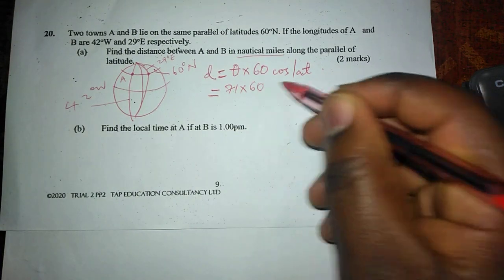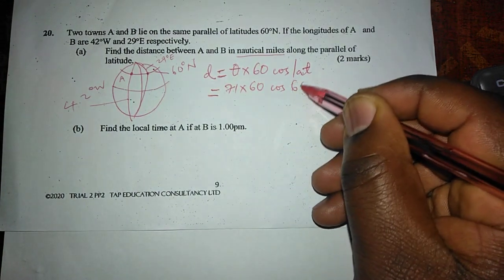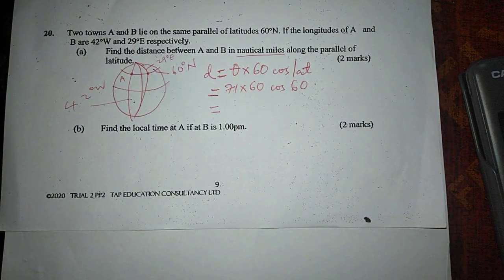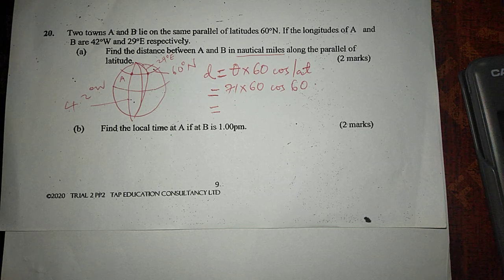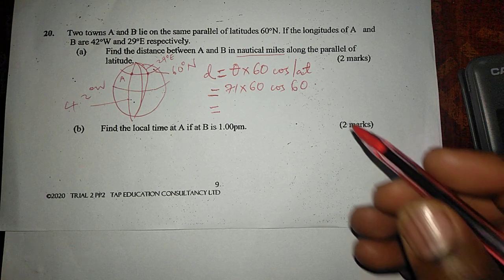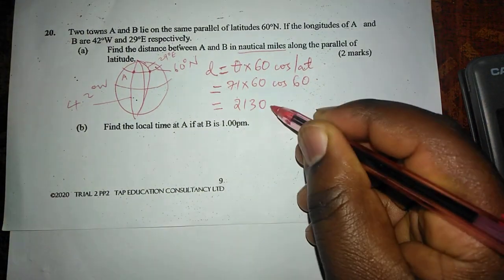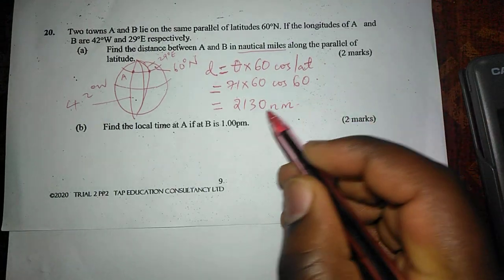So 71 times 60 cosine of 60 because it is the latitude where they lie. So when we take 71 times 60 and cosine of 60, this gives us 2130 nautical miles. So the distance is 2130 nautical miles.